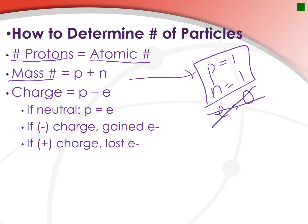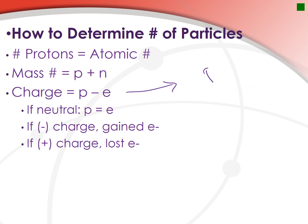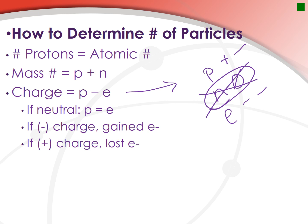As far as charge goes: protons give you positive, neutrons have zero charge, and electrons give you negative. So the only two things that contribute to charge are protons and electrons. A useful formula: charge equals your proton number minus your electron number. You can use this to find your electron count, proton count, or overall charge.